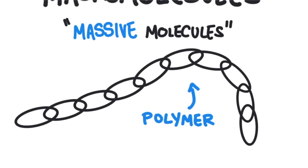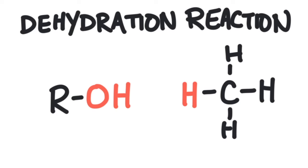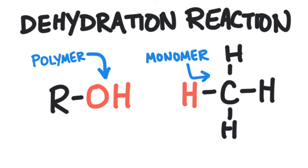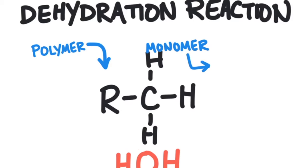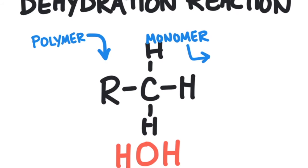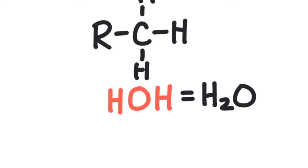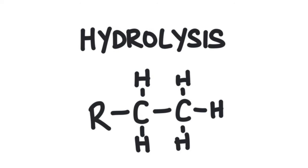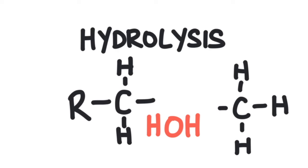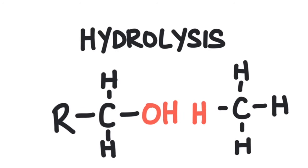When monomers are linked, they go through a process called a dehydration reaction. A dehydration reaction links a monomer to a growing polymer. There is a hydroxyl group at the end of the polymer that reacts with a hydrogen atom attached to the monomer. When the monomer is linked to the polymer, the hydroxyl group (OH) and the hydrogen break off to form a water molecule, leaving the monomer attached to the polymer. This is called a dehydration reaction because water is removed during the reaction. When monomers are unlinked, the opposite reaction takes place — it's called hydrolysis. A water molecule breaks the monomer off the end of the polymer, leaving a hydroxyl group at the end of the polymer and a hydrogen attached to the monomer.